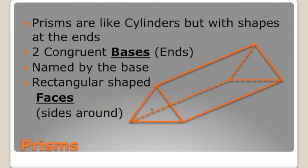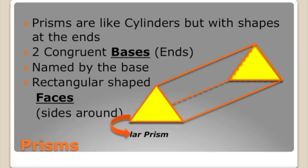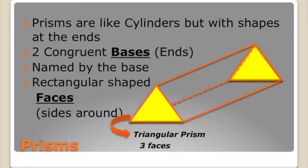What would you call this one? We name it by the base. The base is a triangle, so we call this a triangular prism. And because a triangle has three sides, there are going to be three rectangular-shaped faces. This side over here is one face, this side over here is two, and then the bottom rectangular face makes three faces.